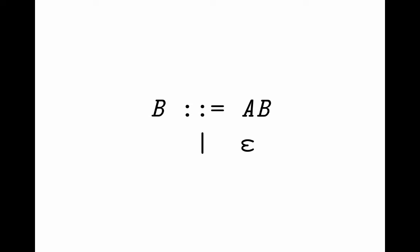In this case, what we can say is that B is now either an A followed by another instance of B, or it's the null string. In this way, B is now an arbitrary long sequence of A's, just as we had intended with A star.